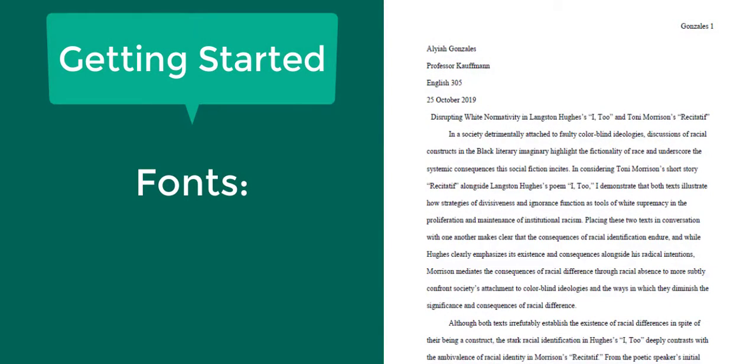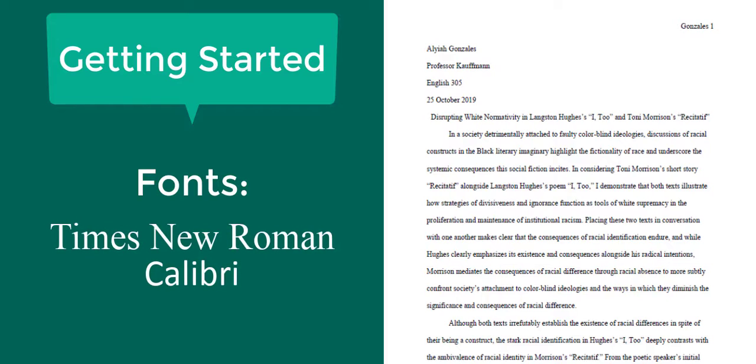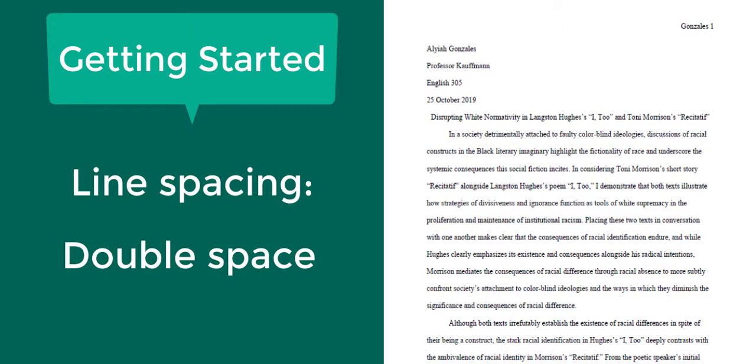Papers in MLA format include fonts that are easily readable such as Times New Roman. Text should be set to a standard size such as 12 point font. Double space the entire research paper including the works cited list. Don't add extra space before or after paragraphs.